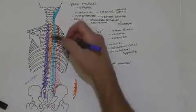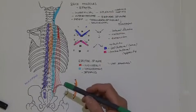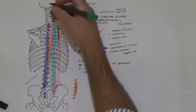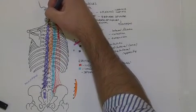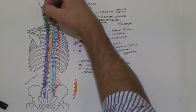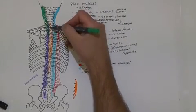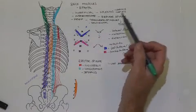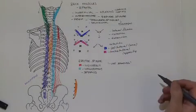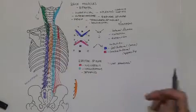Multifidus is a contralateral rotator, whereas the erector spinae are ipsilateral rotators. The splenius muscles — splenius capitis and splenius cervicis — originate from the spinous processes of T1 through T4. Splenius capitis travels upward to the side of the skull; it is a very superficial muscle covering many of the muscles we've drawn. Its fibers originate medially and go laterally, following the same fiber direction as erector spinae, so it creates lateral flexion and ipsilateral rotation. Bilaterally it would create extension of the neck.